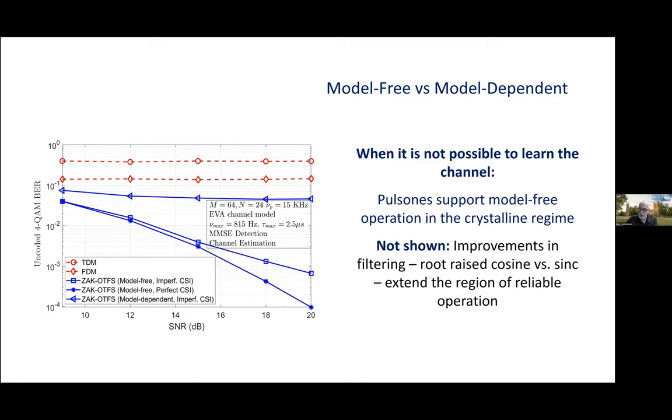Well, in this slide, we explore performance when it's not possible to learn the channel. We return to the vehicular A channel model that we use to study the impact of fading. Doppler spread of 1.63 kilohertz, delay spread of 2.5 microseconds, M delay bins, N Doppler bins, with a Doppler period nu_p of 15 kilohertz.